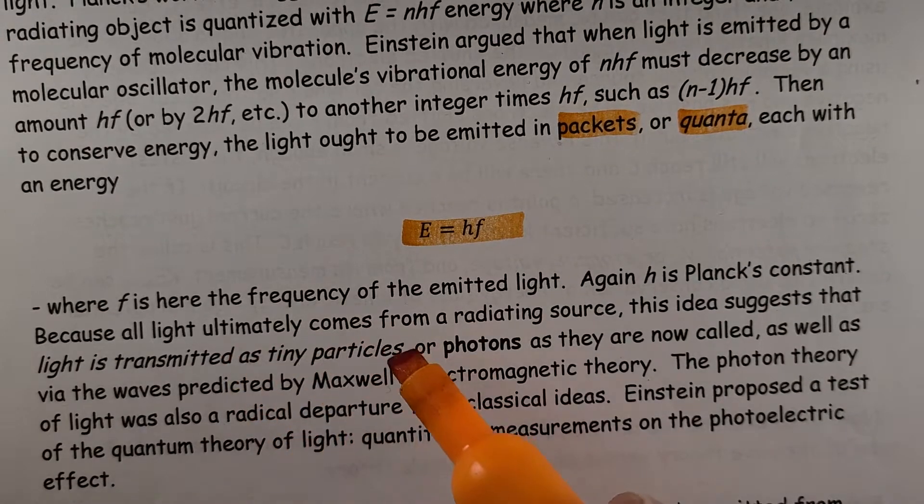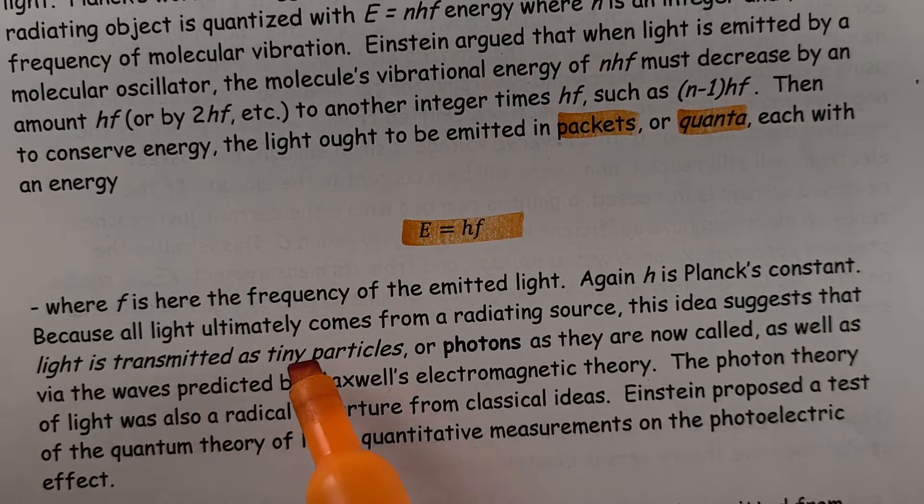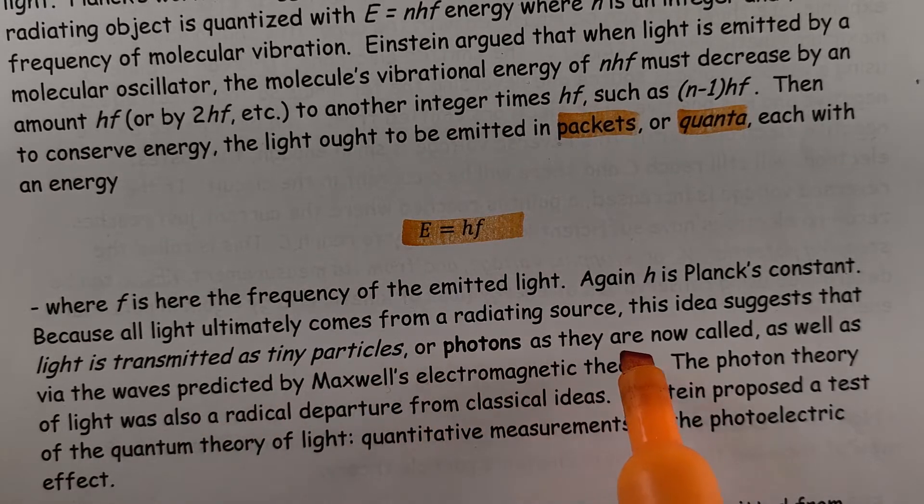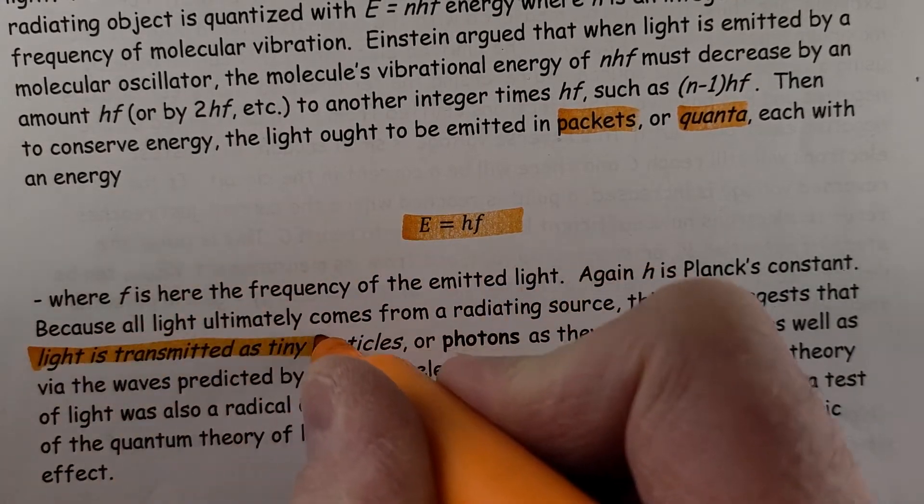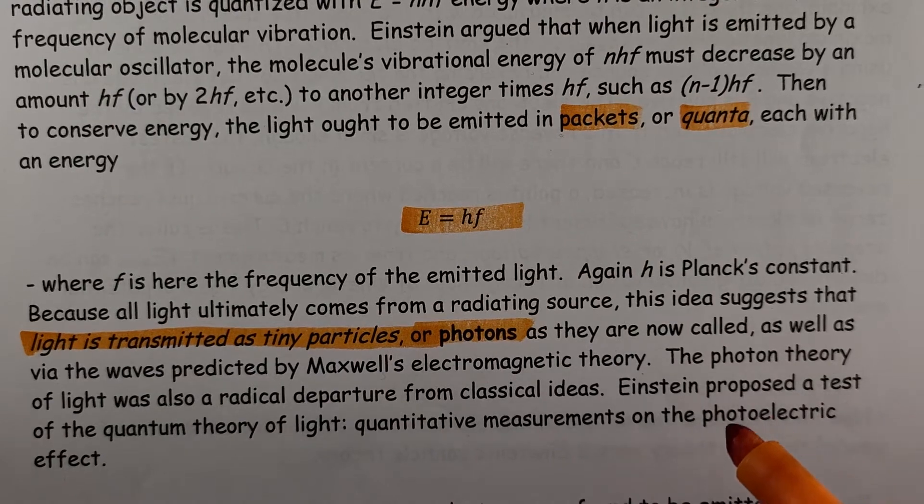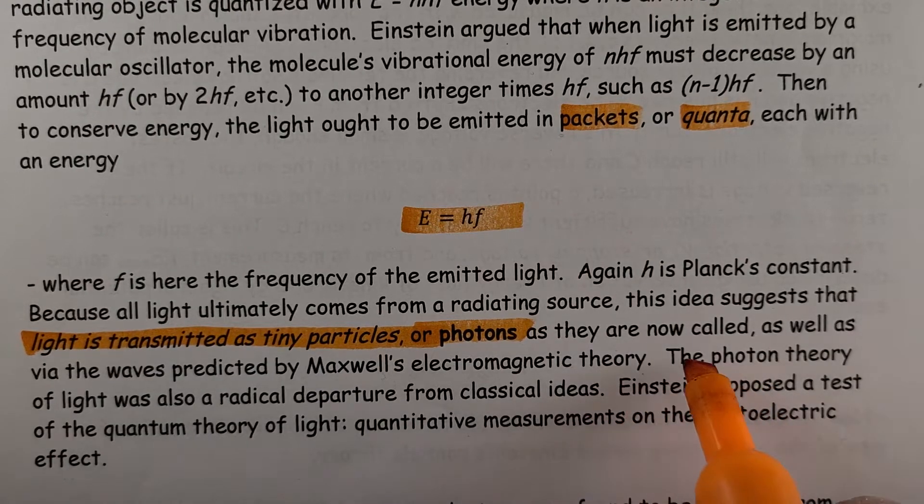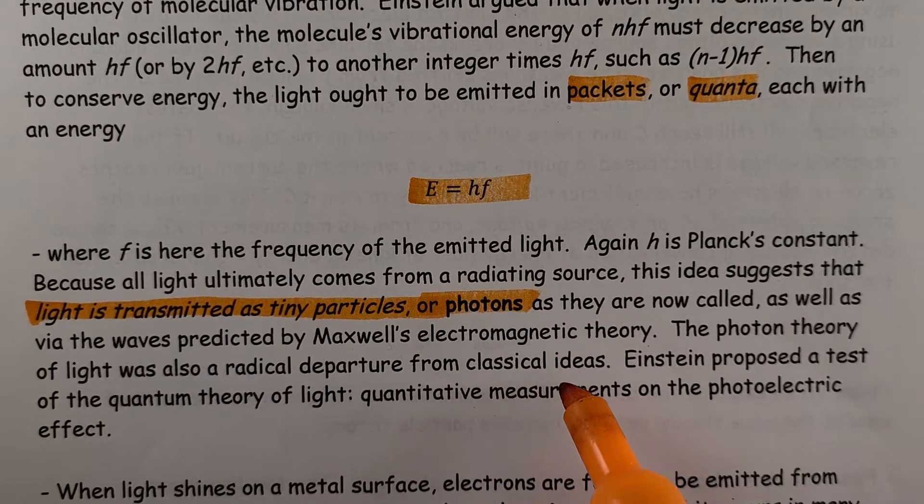Where F is the frequency of the emitted light, H is Planck's constant, because all light ultimately comes from a radiating source. This idea suggests that light is transmitted as tiny particles or photons, which have a minimum amount, as they are now called, as well as via waves predicted by Maxwell's electromagnetic theory.